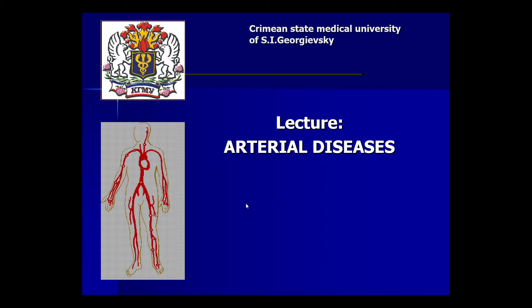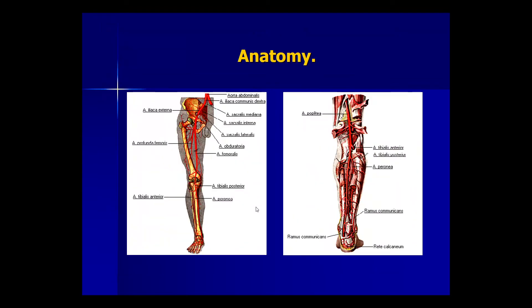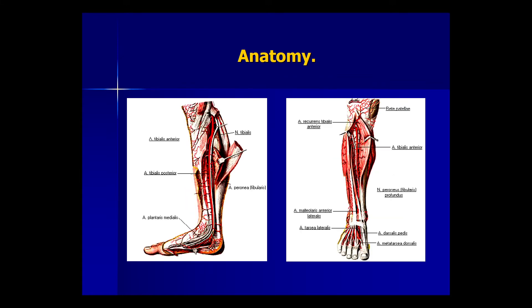Good afternoon. Today we have a lecture on arterial diseases. This picture shows the anatomy of arteries of the lower extremities, beginning from the bifurcation of the abdominal aorta, which divides into the common iliac arteries, right and left. The common iliac artery divides into external and internal iliac artery. The external iliac artery continues to the femoral arteries and profunda femoris arteries. The femoral arteries continue to the popliteal artery, which divides into the posterior and anterior tibial arteries, continuing to the arterial foot.